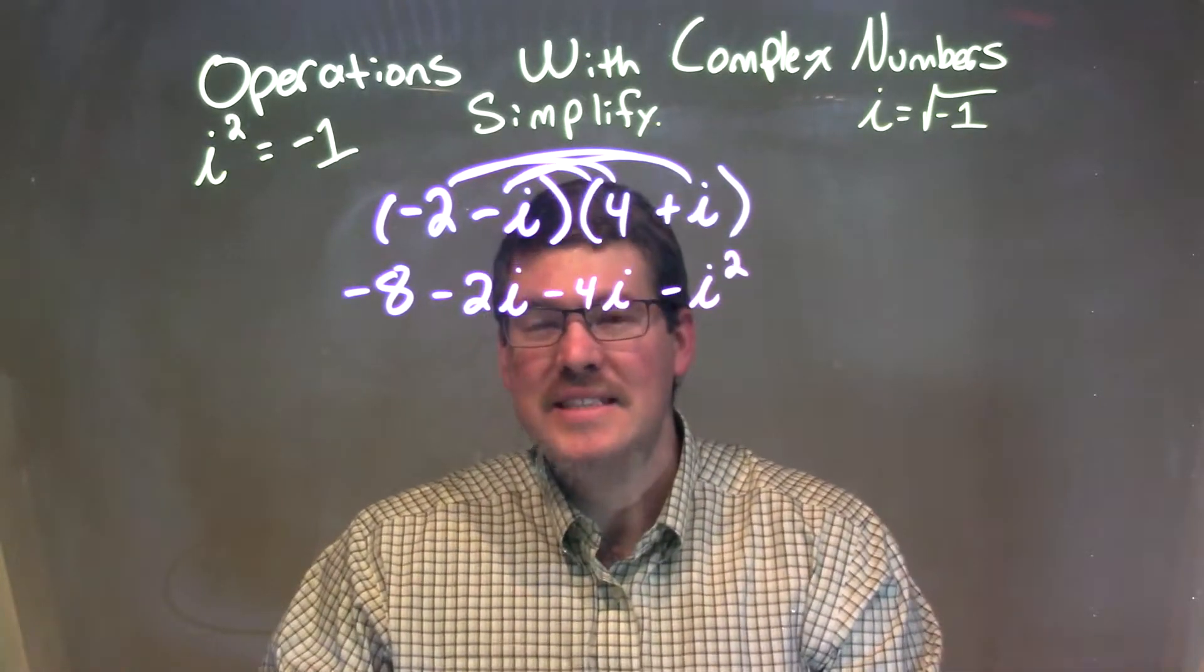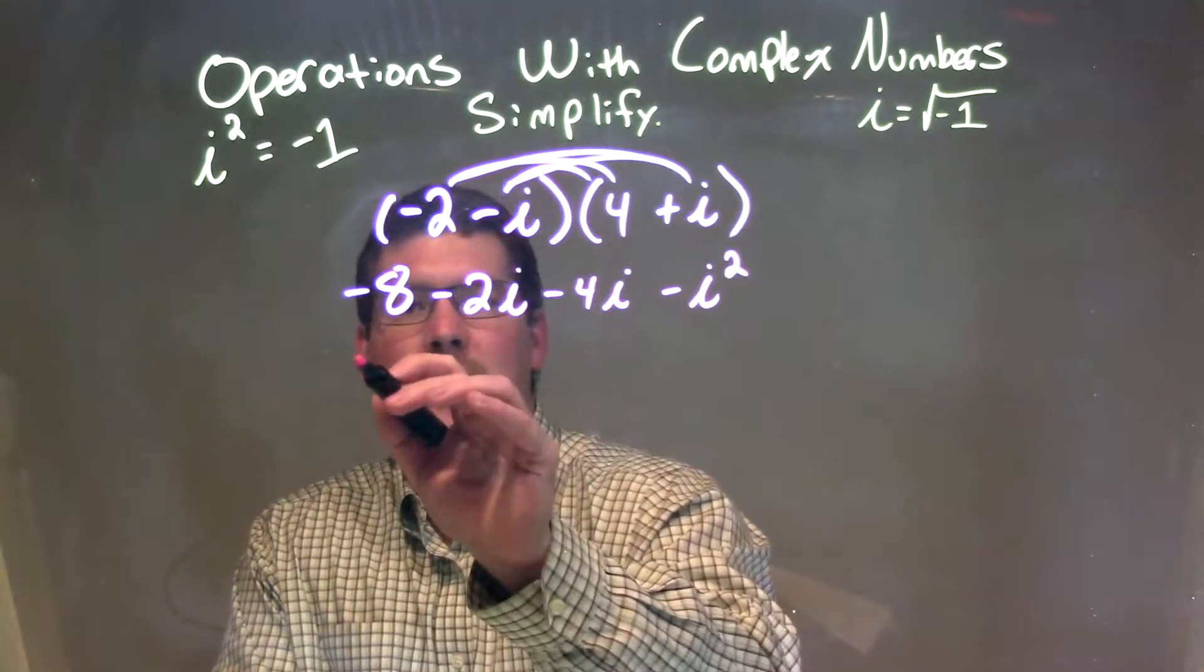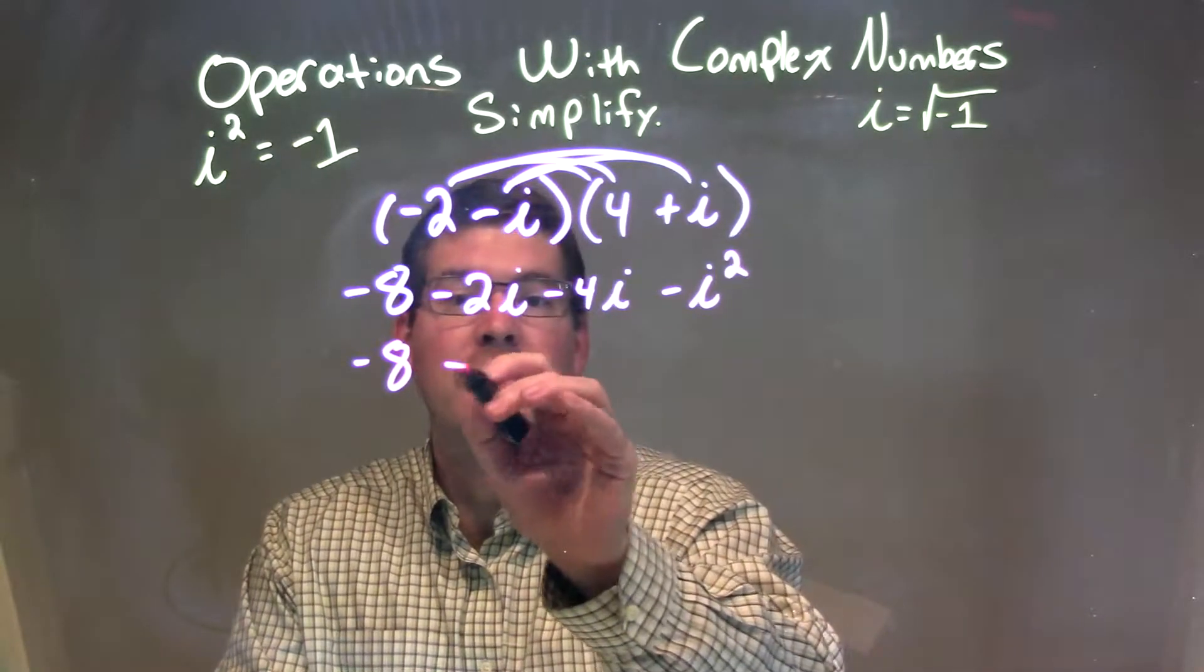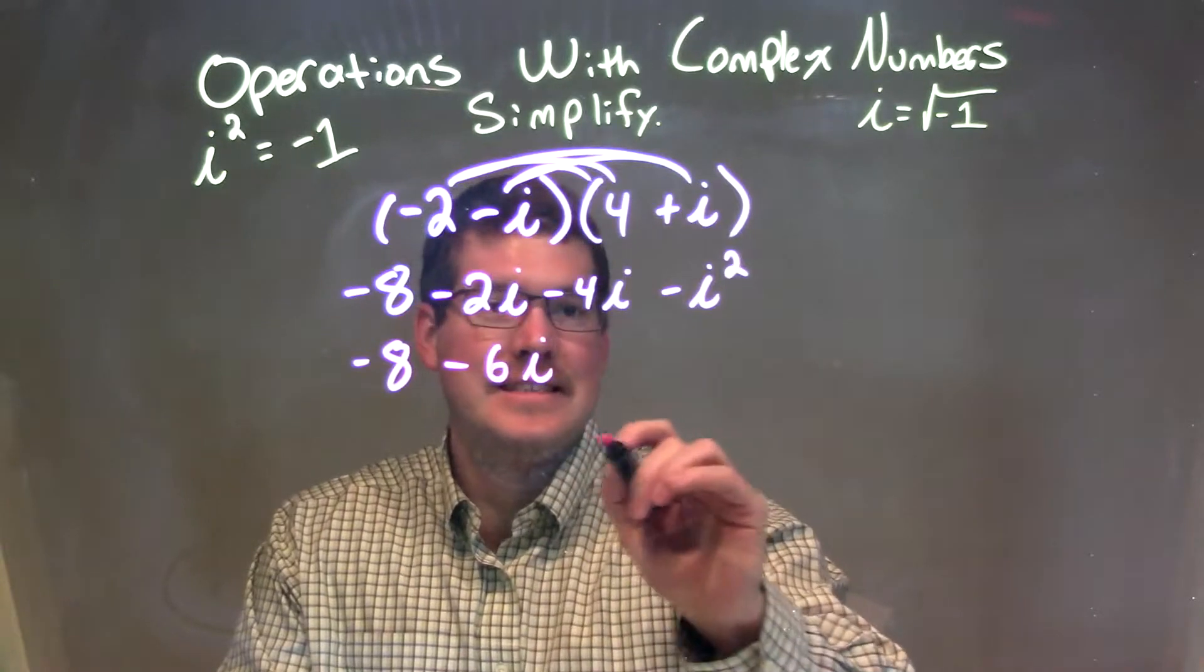So, now we just need to simplify this. We'll combine some things. Well, minus 8 is just out there, but minus 2i and minus 4i combine to be minus 6i.